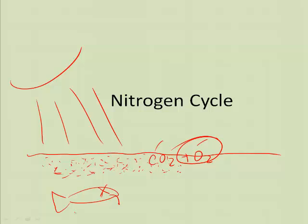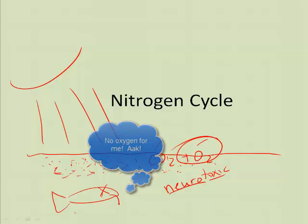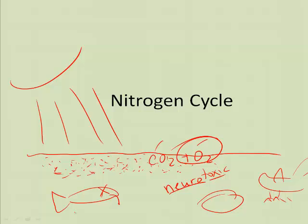This algae also produces neurotoxic chemicals — chemicals that are toxic or poisonous to the nerves — which can kill shellfish like clams and oysters, seabirds, and marine mammals like whales. So humans can tip the balance of nitrogen cycling throughout the biosphere by adding extra nitrogen, with devastating effects on aquatic life. In the next video, we'll take a look at the phosphorus cycle.